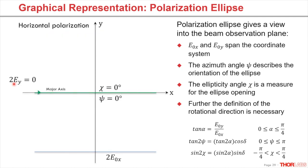Finally, we come to the case where one field vector has zero amplitude. In that case, there is no rotation and no ellipse opening, so both psi and chi angles are zero. There are two of such states: the horizontal polarization shown here and, in the opposite direction, the vertical polarization.